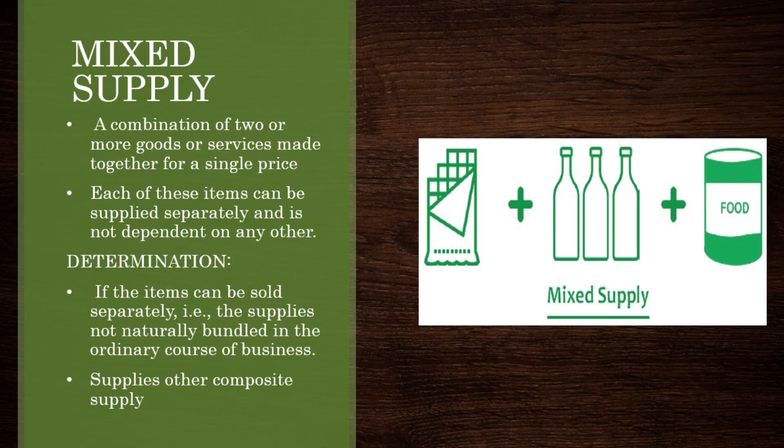For example, in Mixed Supply, you generally have a combination of goods or services. It's not naturally bundled, but it's a combination. For example, a gift pack — a Diwali gift pack.